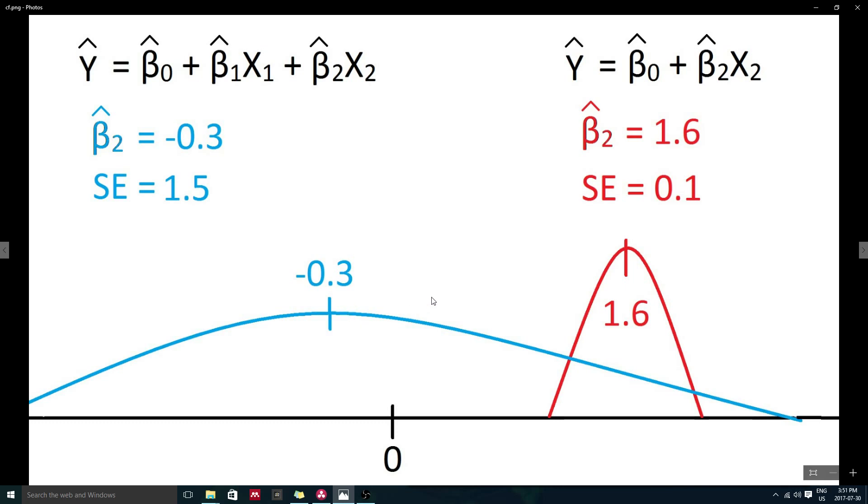Now, note how these normal distributions for x2's regression coefficients overlap. The coefficient from the bivariate model has a tight distribution, suggesting the estimate is relatively accurate. The coefficient from the multivariate model, however, is extremely wide.